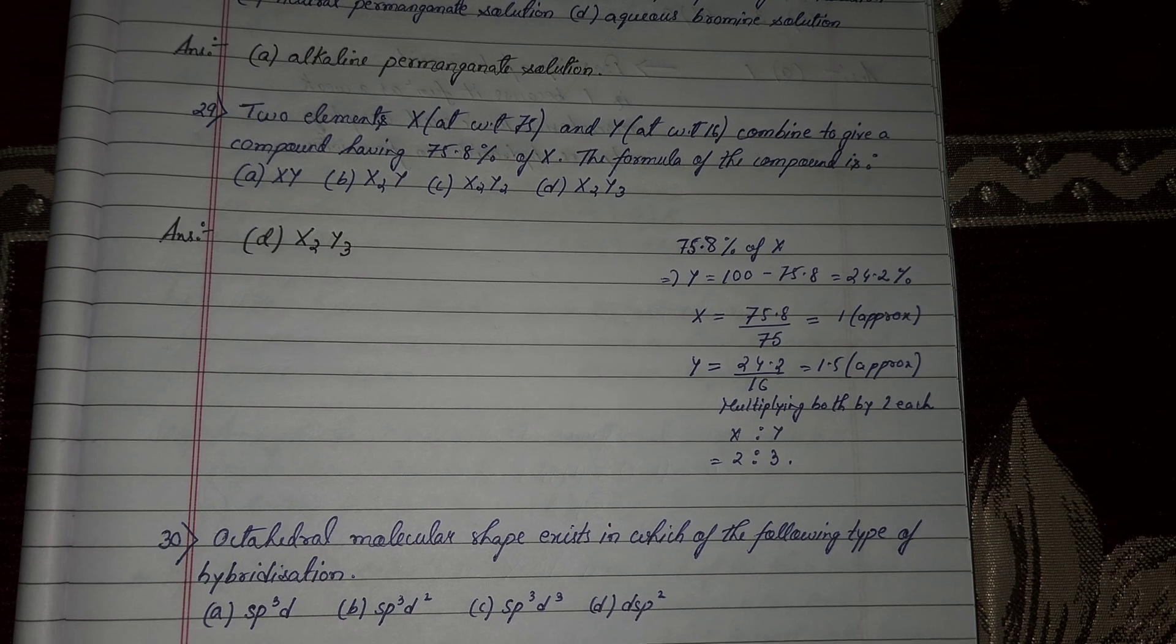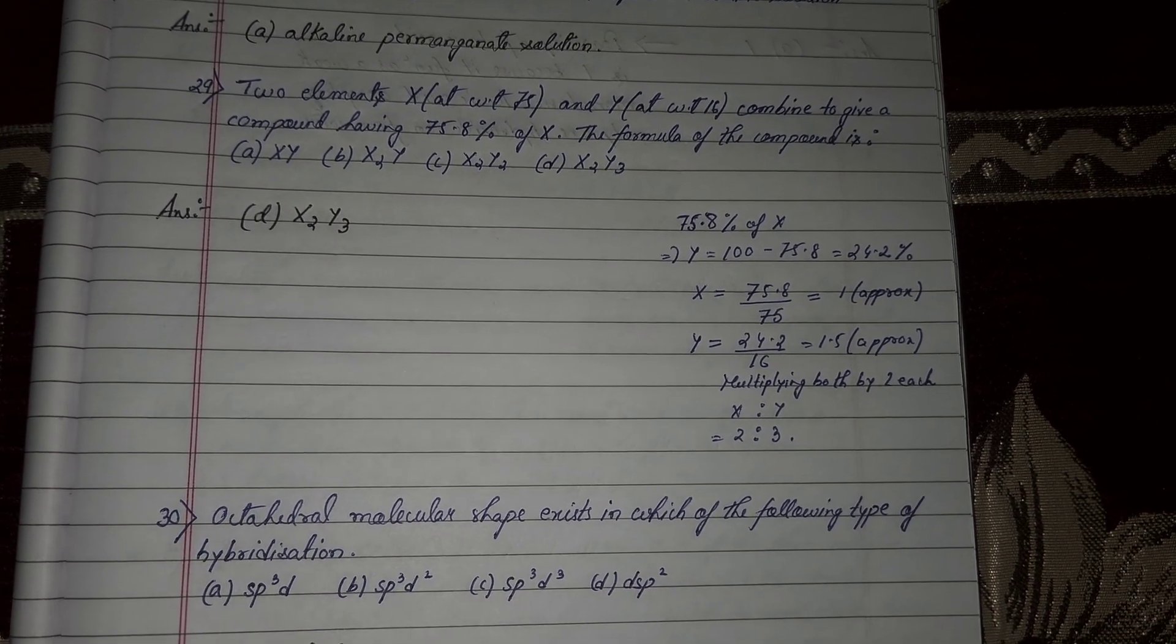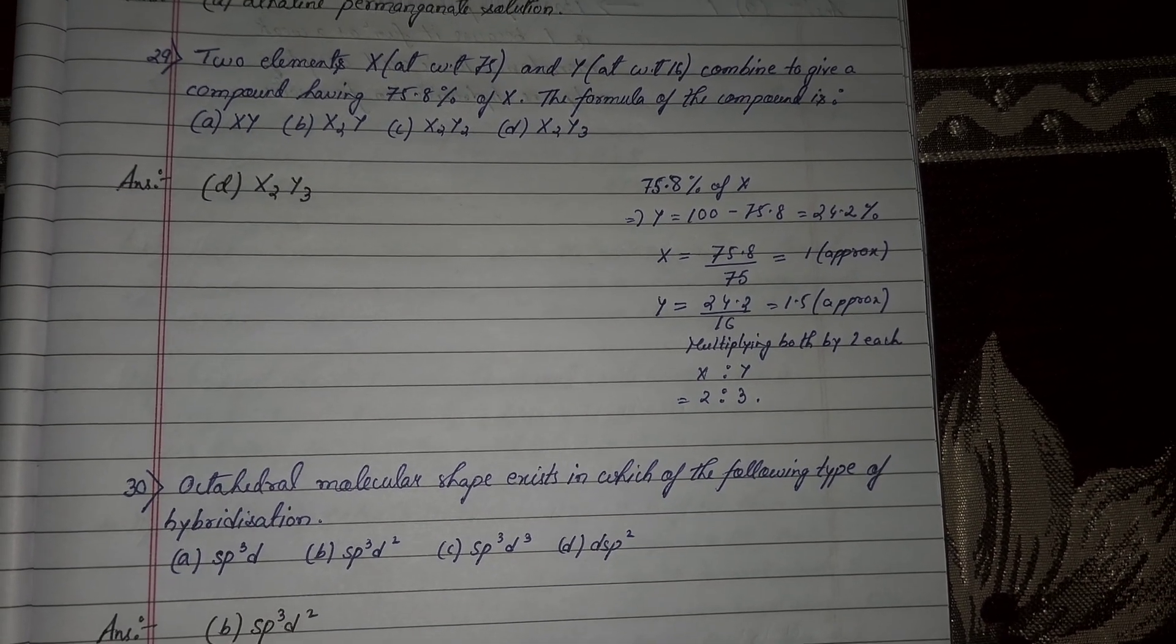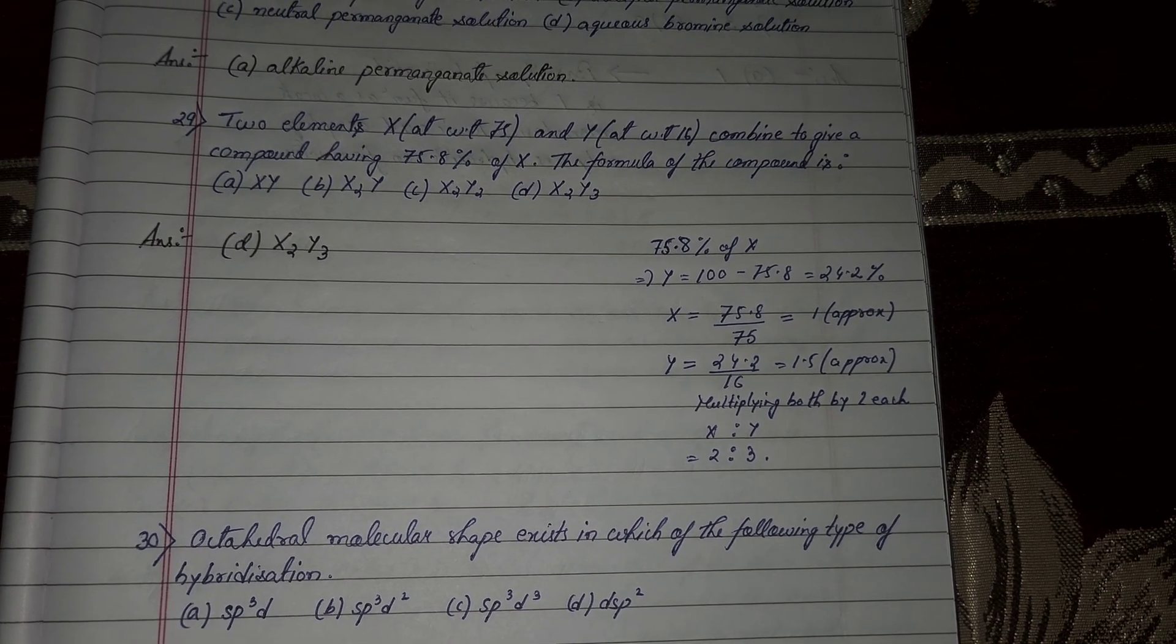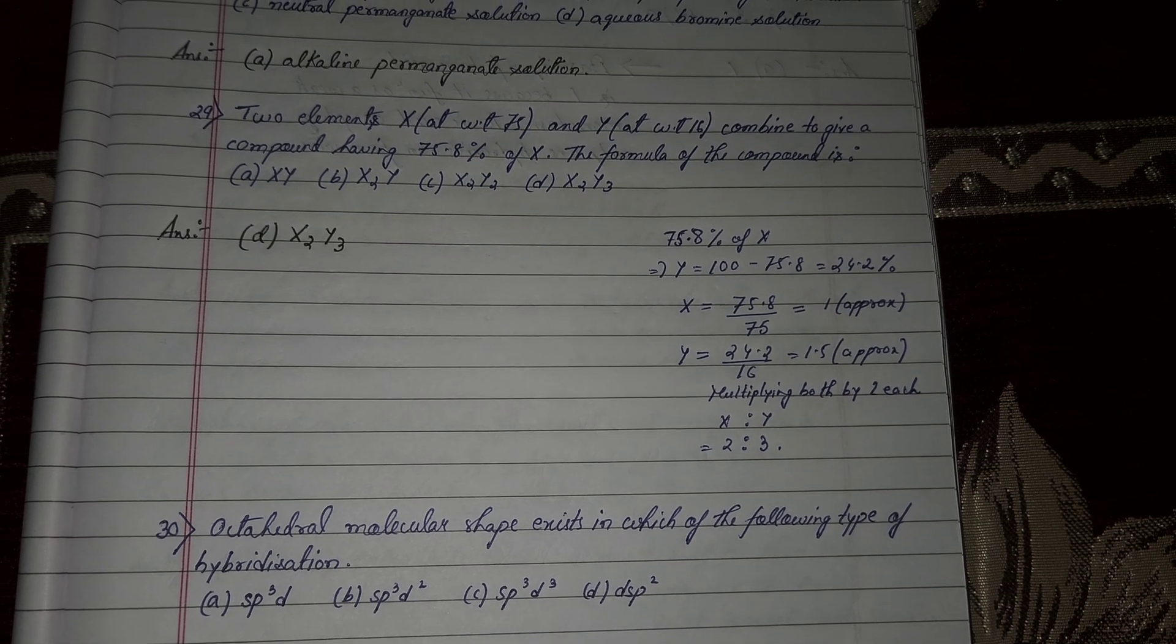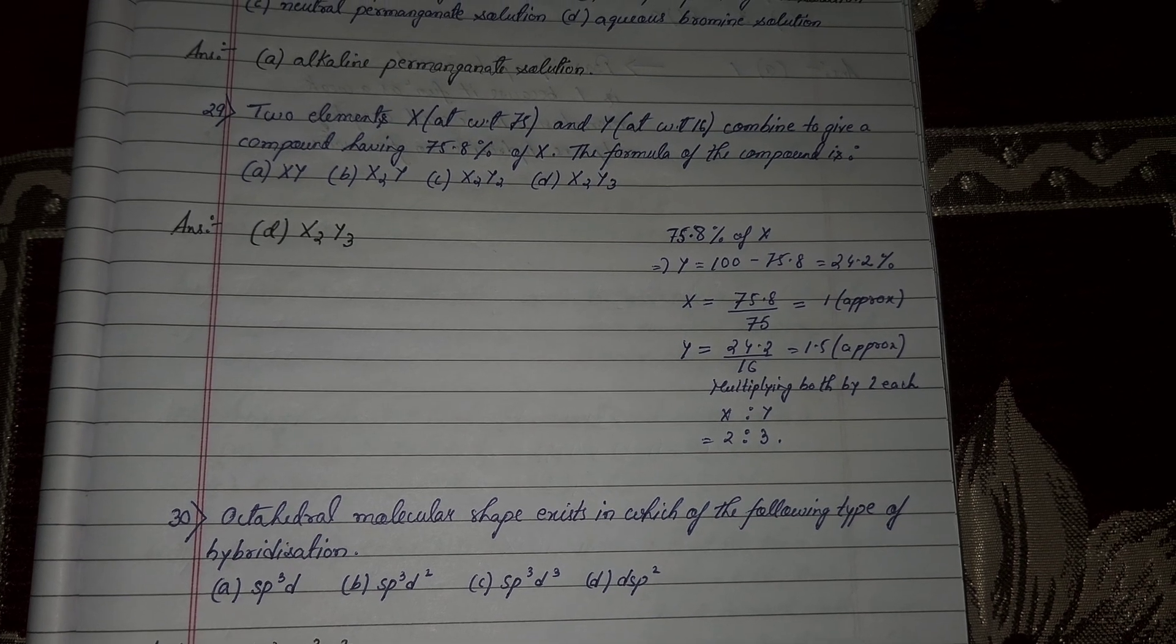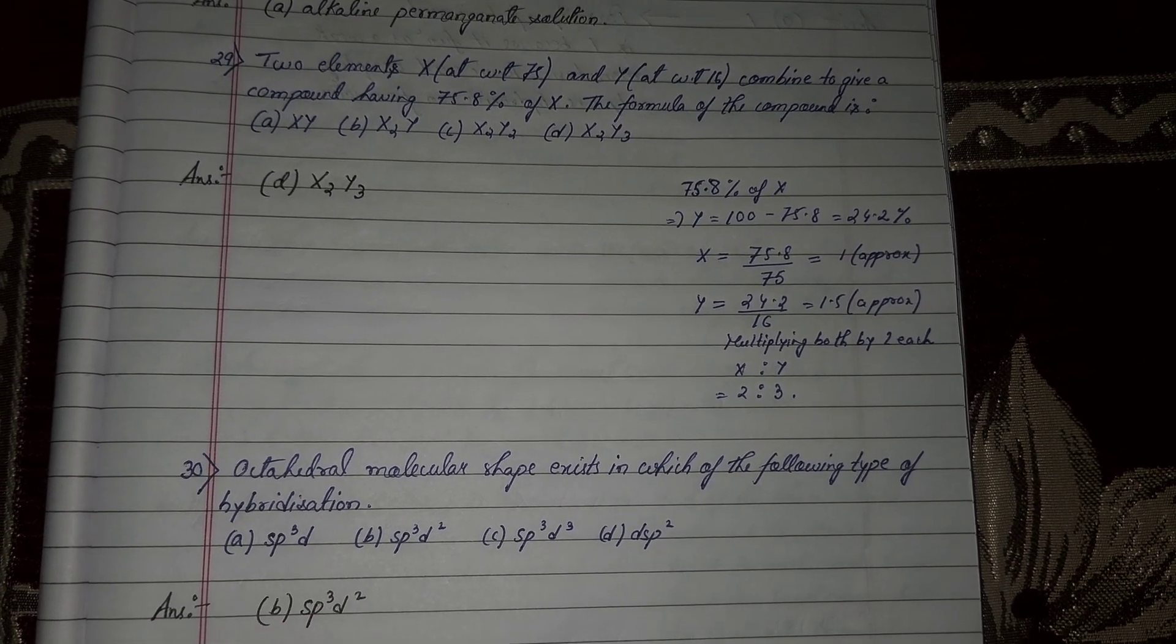X atomic weight 75, percentage 75.8, so 75.8 by 75 equal to approximately 1.5. Y equal to 24.2 divided by atomic weight 16, equal to approximately 1.5. Multiply by 2, whole number, X is 2, Y is 3, 2 is to 3. Option number D, X2Y3 will be correct answer.